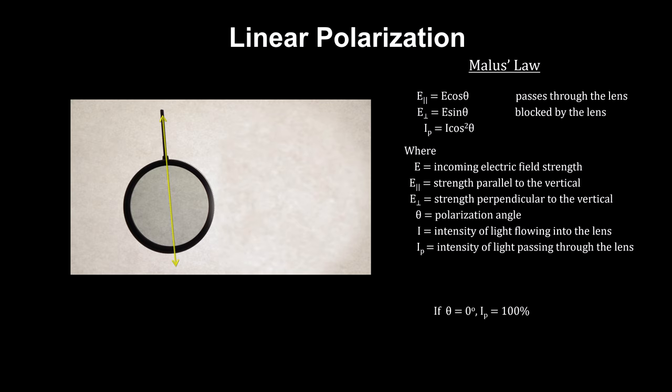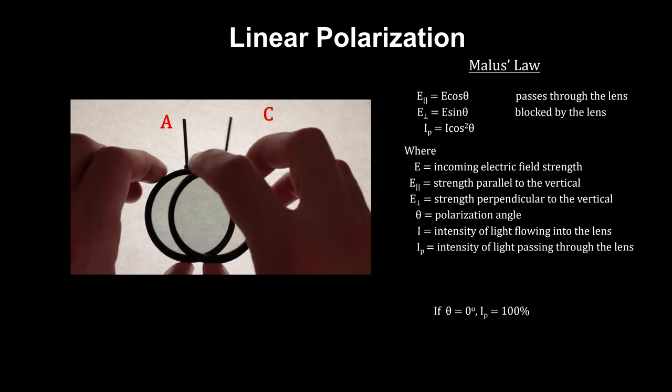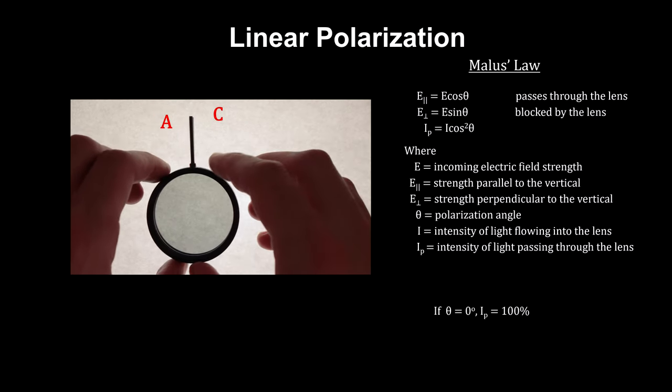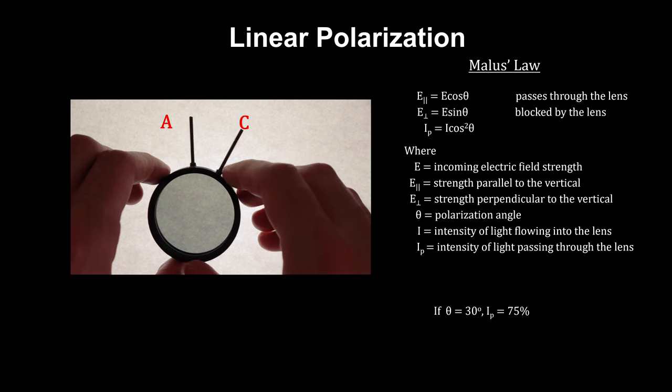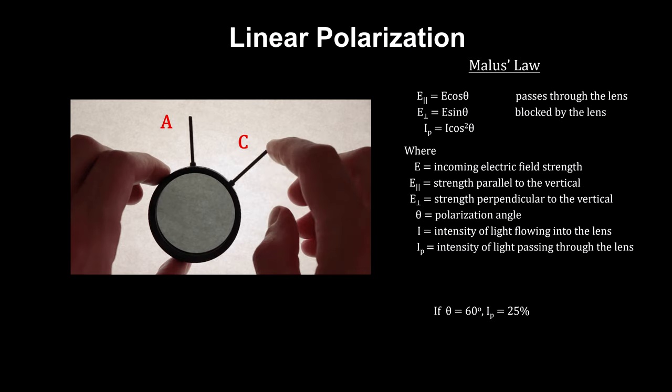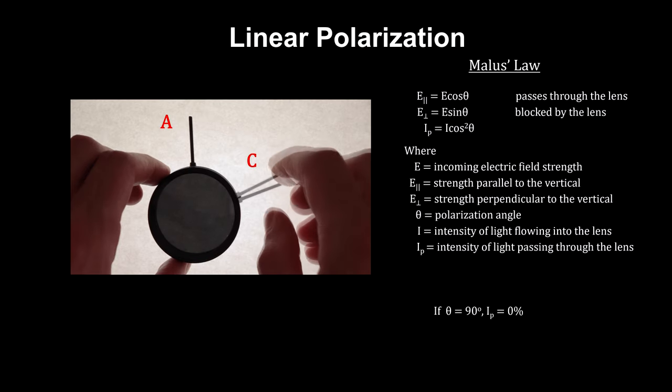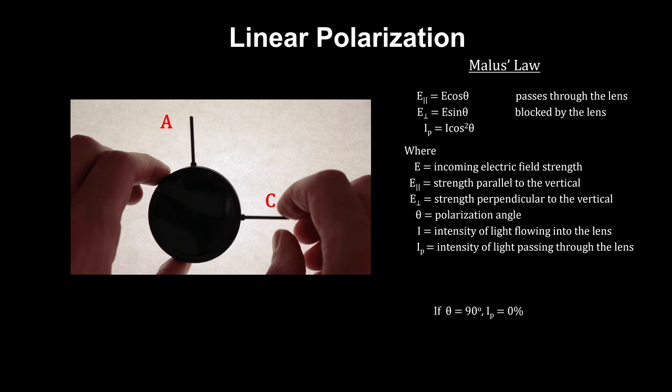We'll call this lens A. If we bring a second lens, lens C, and orient it the same as the first, all the light that passes through A passes through C. But as we rotate lens C, we see that the amount of light passing through is going down. By the time we reach 90 degrees, C is blocking all the light that passes through A.